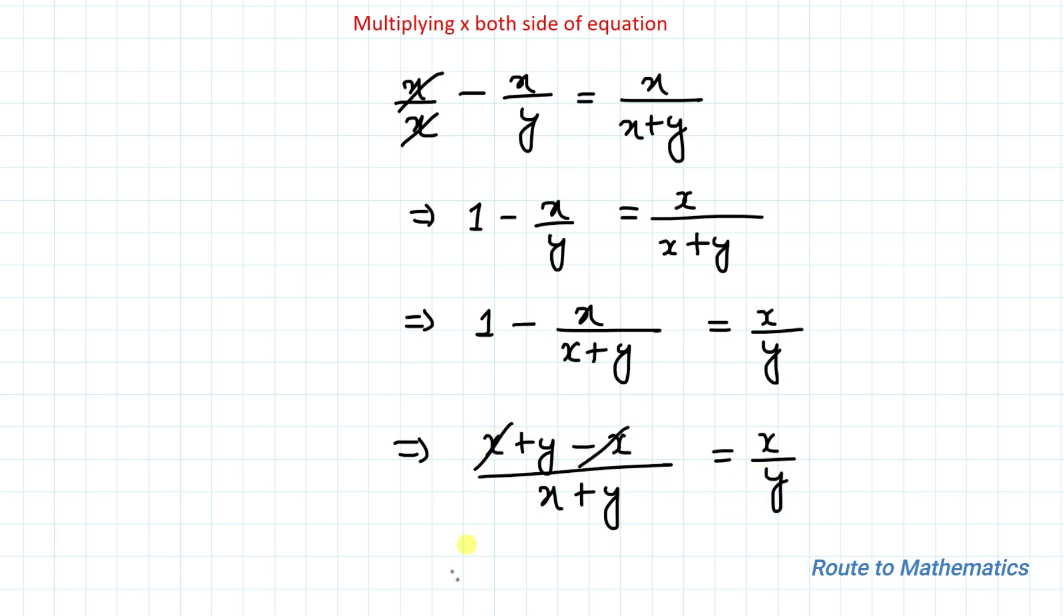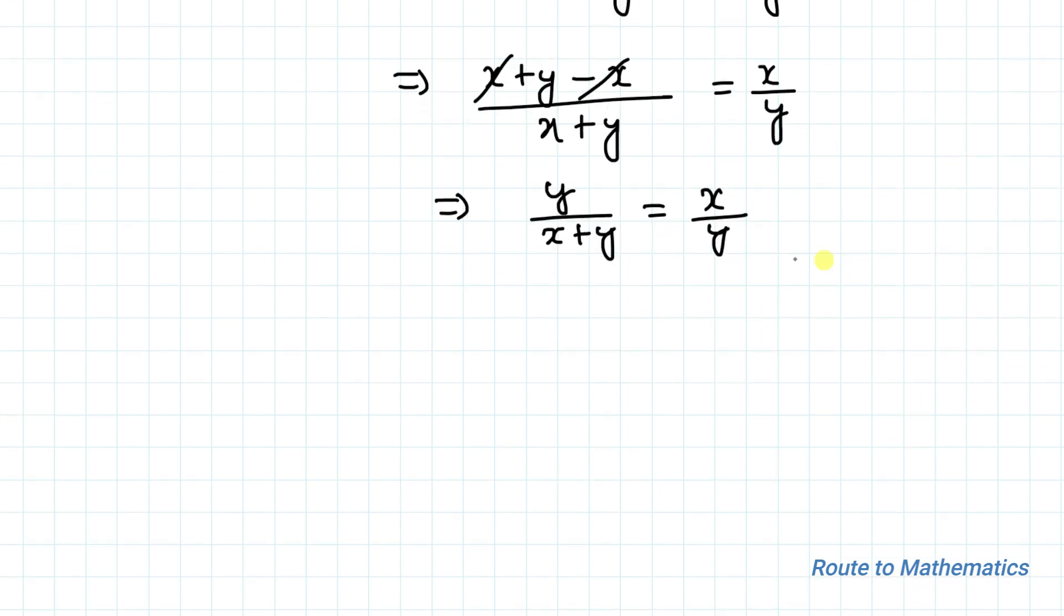Here +x and -x get cancelled out, so we have y/(x+y) = x/y. We are asked to find y/x, and here we have x/y, so let's take the reciprocal. We have (x+y)/y = y/x.